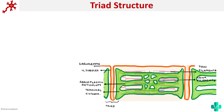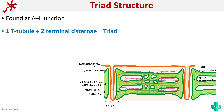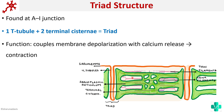The triad structure is found at the AI junction and consists of one T-tubule and two terminal cisternae. Its function is to couple membrane depolarization with calcium release, which leads to contraction.